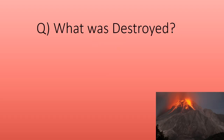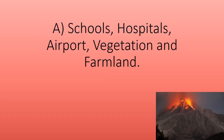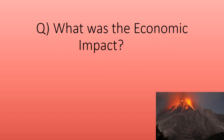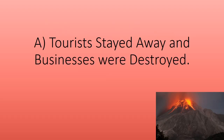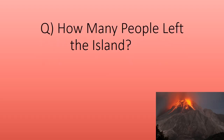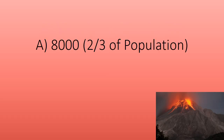What was destroyed? Schools, hospitals, airports, vegetation, and farmland. What was the economic impact? Tourists stayed away and businesses were destroyed. How many people left the island? Eight thousand — two-thirds of the population.